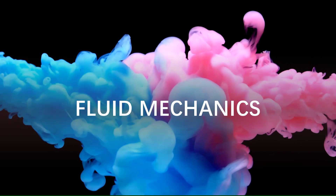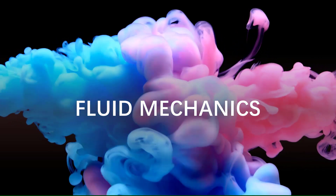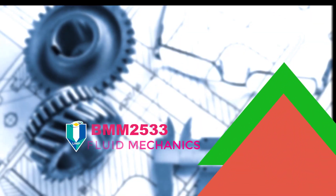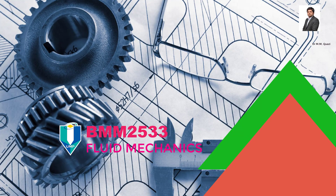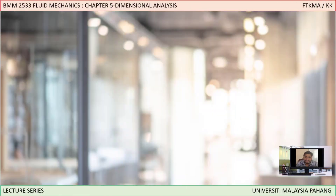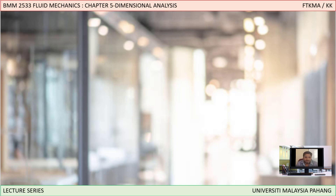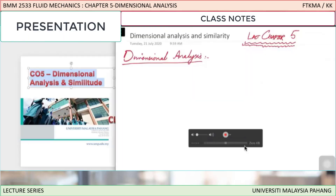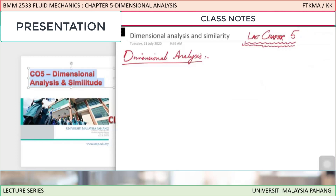Hello everyone. Let us start chapter number five, which is dimensional analysis and modeling — or dimensional analysis and similitude. This chapter is all about dimensions: how to derive dimensions, what are the units, what is a non-dimensional parameter, and how to derive non-dimensional parameters.